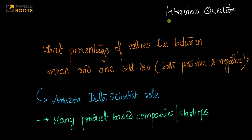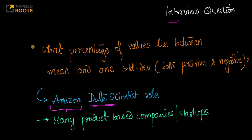Hi friends, here is a very interesting interview question that is often asked for data scientist roles at good product-based companies and startups. A question very similar to this has been asked at companies like Amazon. The question might look too simple, but don't fall into the trap of it. The question is from basic probability theory. So the question is: